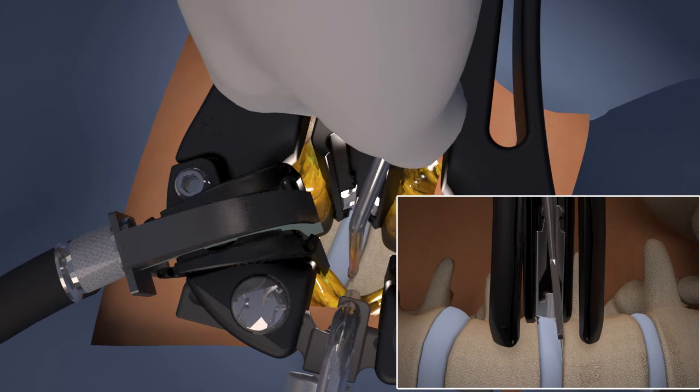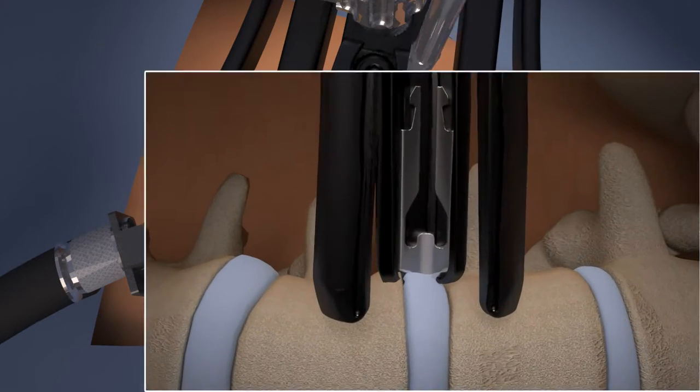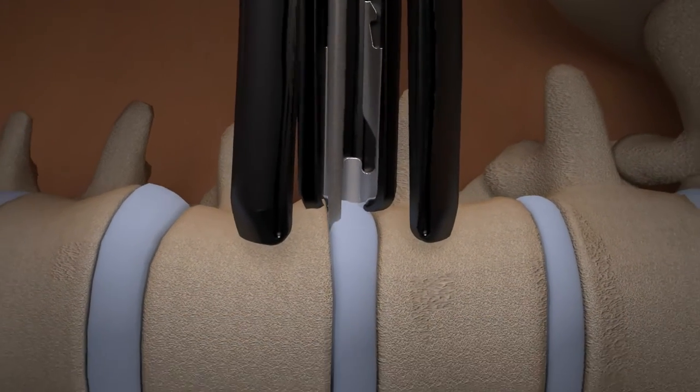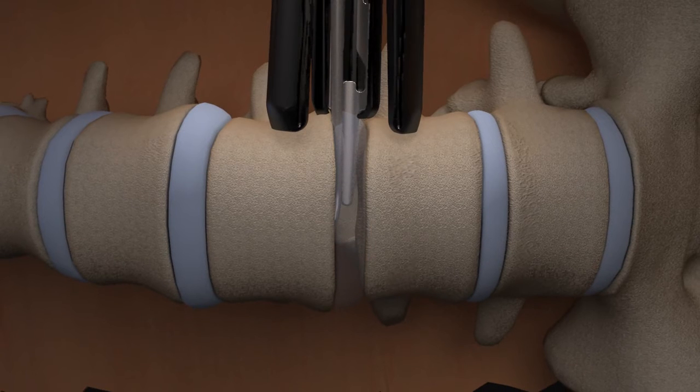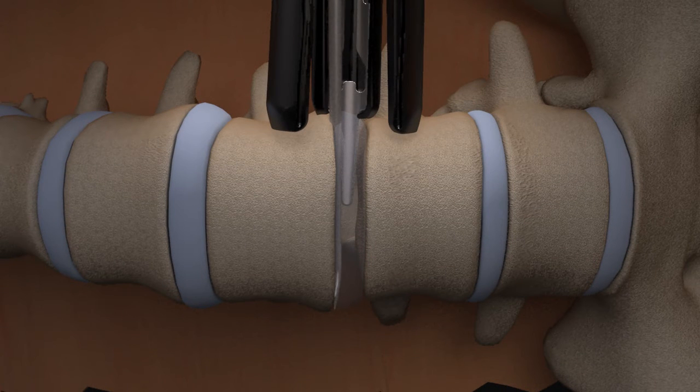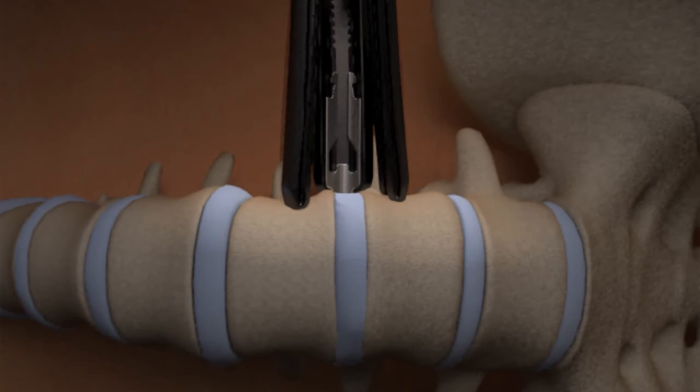Incise the annulus along the end plates approximately the width of the implant. Use a cob elevator to separate the disc material from the end plates and to release the contralateral annulus. Always use care not to compromise the integrity of the end plates. Remove as much disc material as possible.